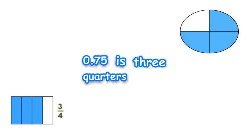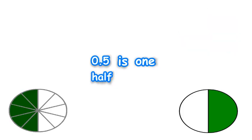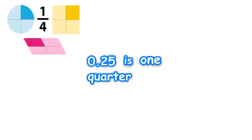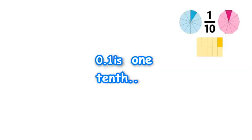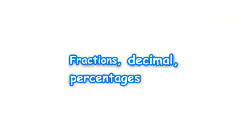0.75 is three-quarters, that's the same as 75 percent. 0.5 is one-half, that is five-tenths or 50 percent. 0.25 is one-quarter, that's 25 percent. 0.1 is one-tenth, that's the same as ten percent. Fractions, decimals, percentages — let's go. Fractions, decimals, percentages.